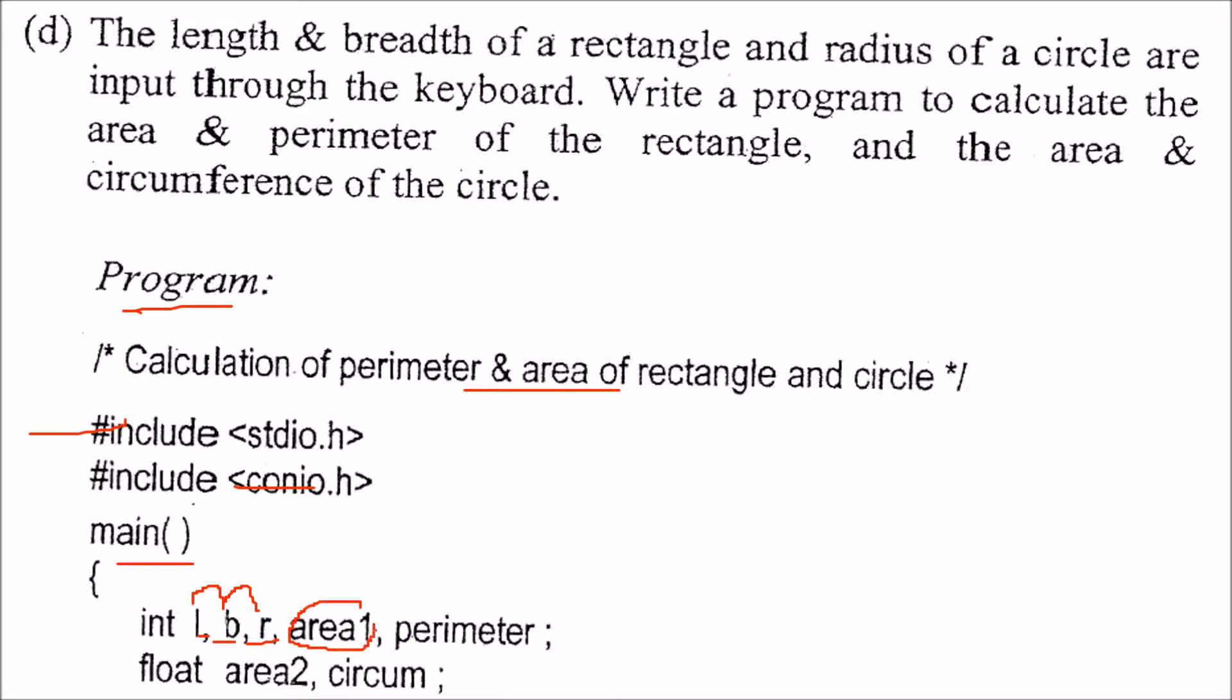This is area1, we'll take it for the first shape, rectangle. Perimeter for rectangle. Then the second one will take float because we know that in circle pi, that is 3.14, is involved. So this is a decimal value. We'll take the area and circumference as float for the circle.